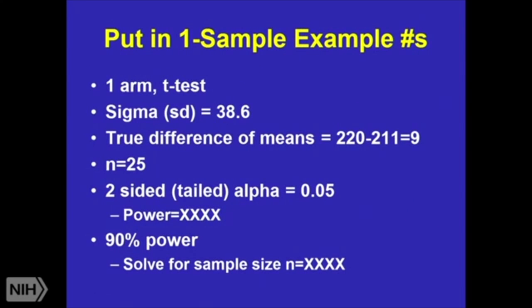For the one-sample test: if I put in my sigma and the true difference of means, and I want 90% power, I need 170 people. I basically have no power with my little sample of 25 to test for any types of difference in cholesterol. But what is a clinically meaningful difference in total cholesterol? What should I be testing as that difference? These are all questions we would ask each other in advance of the study — not afterwards when you come to me and say, I have 25 medical records.